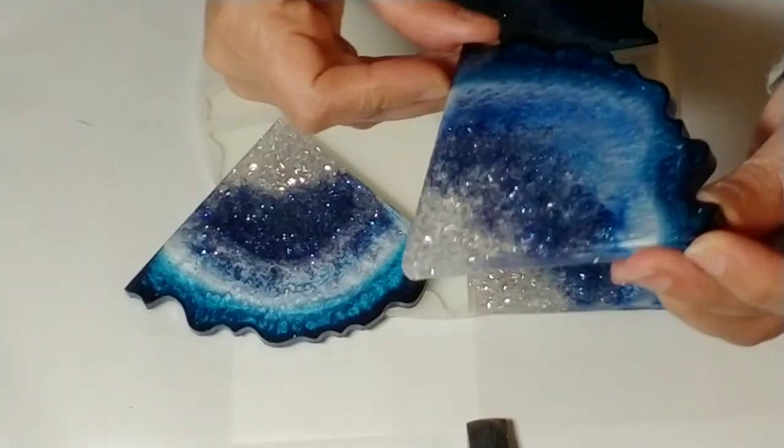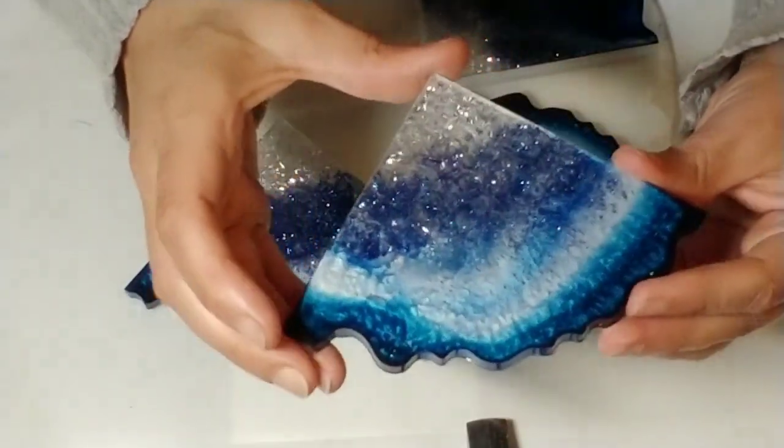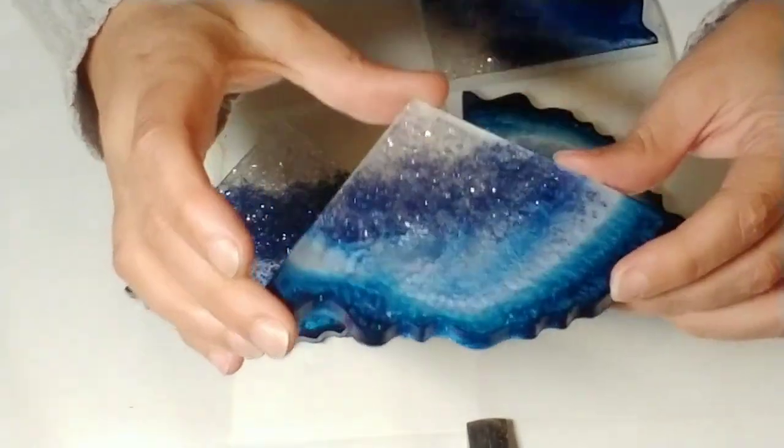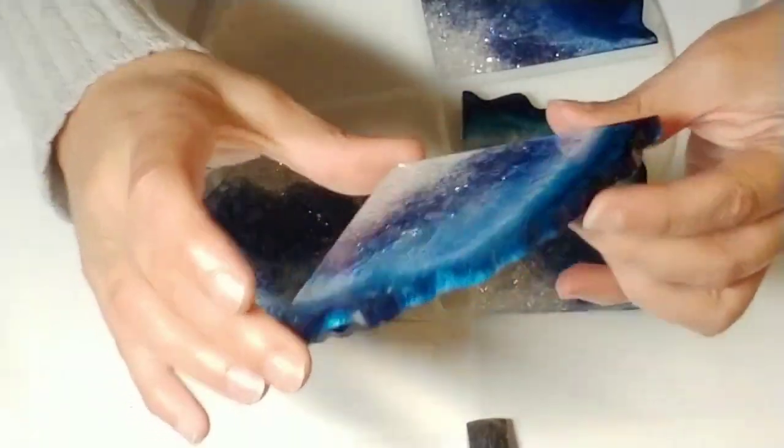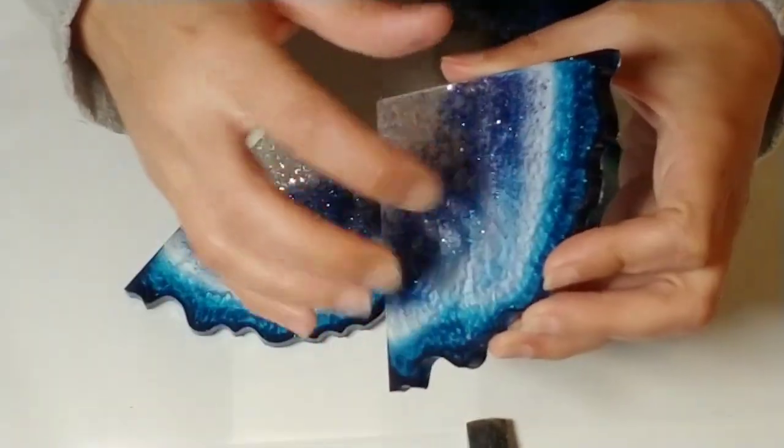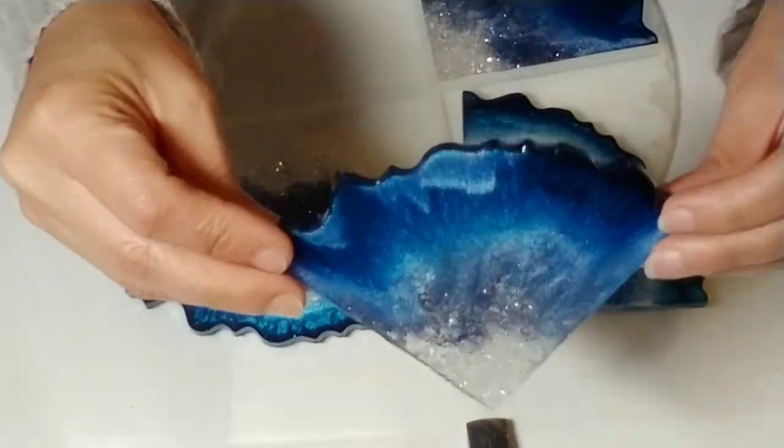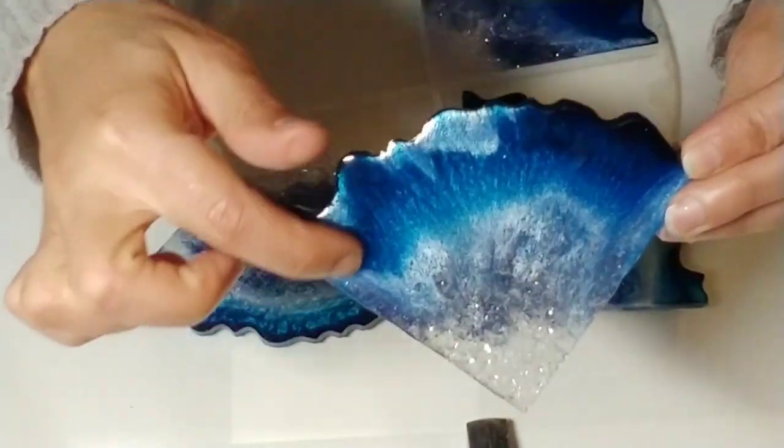Next time I make a set like this, the only thing that I might do different is actually add some white pigment to the mica, and that'll make the white a little bit more pronounced and not spread out as much. But I actually do like the effect, especially up here. I just love that.